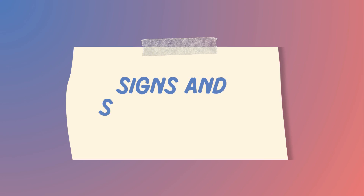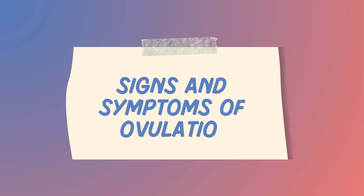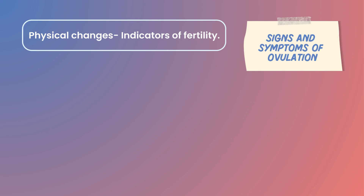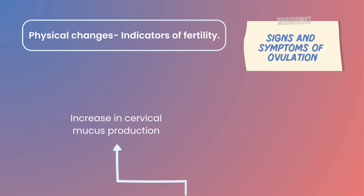Now, let's delve into the signs and symptoms of ovulation. During ovulation, the body undergoes a series of physical changes that serve as indicators of fertility. One prominent sign is the increase in cervical mucus production, often resembling raw egg whites. This fertile cervical mucus aids in sperm survival and facilitates their journey towards the uterus.